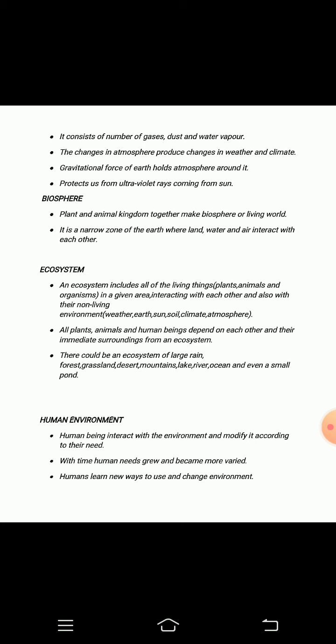Now I will explain the topic ecosystem. What is ecosystem? A complex relationship between all the living and non-living things — plants, animals, organisms, sun, water, climate, etc. — that interact with each other is known as an ecosystem.